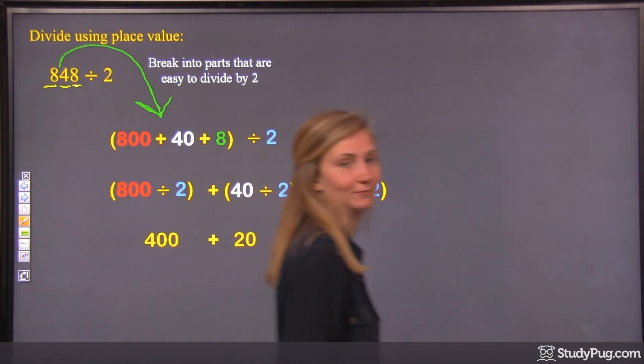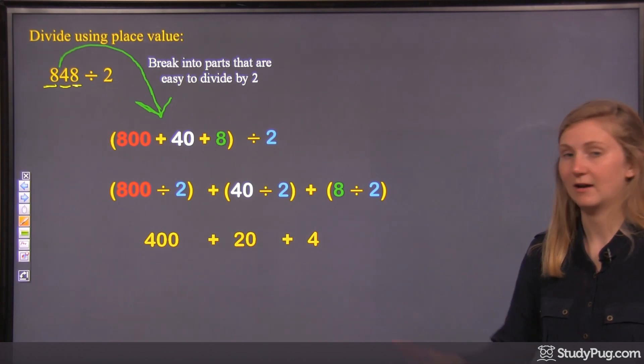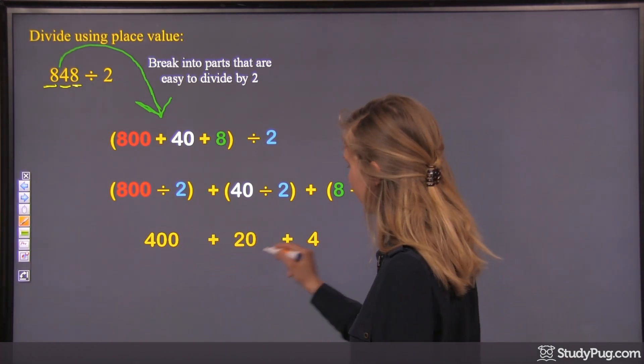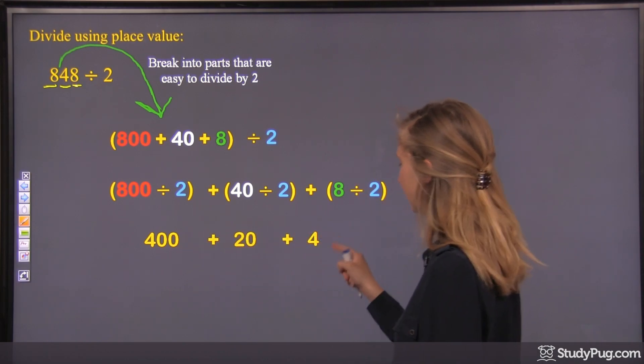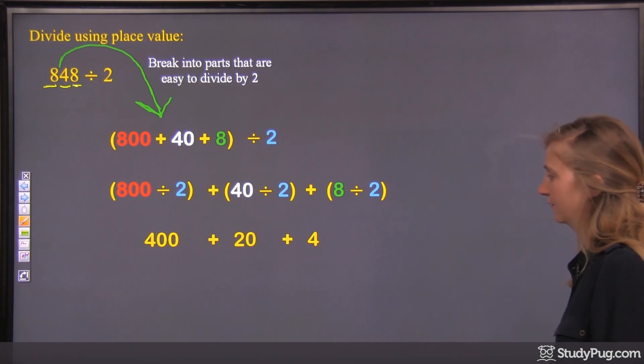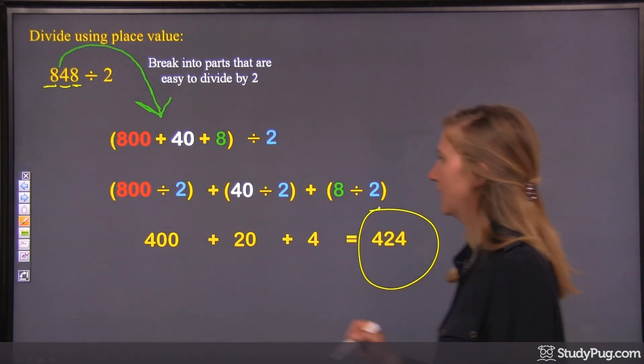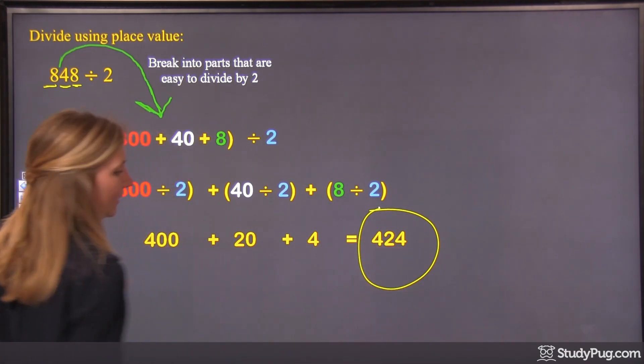And then last one, 8 divided by 2, 4. So there's all our parts of our division. And then all we need to do is just add those up. 400 plus 20 plus 4, we get 424. So there is our final answer. 848 divided by 2 equals 424.